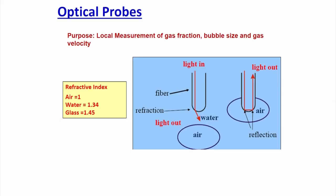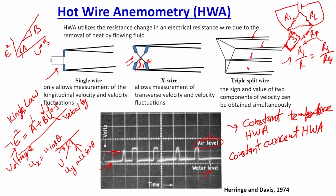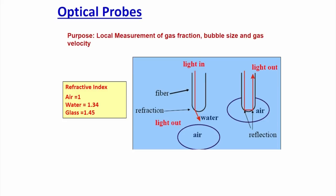Next is the optical fiber probe, which overcomes several HWA limitations. With the development of optical fiber probes, researchers applied this technique to multi-phase flow velocity measurement. In an optical fiber probe casing, there are two wires: one emits light and another receives or absorbs light. Each phase has a different refractive index — for example, in air-water systems, air has refractive index 1 and water 1.34 — so the reflected light intensity differs for each phase.